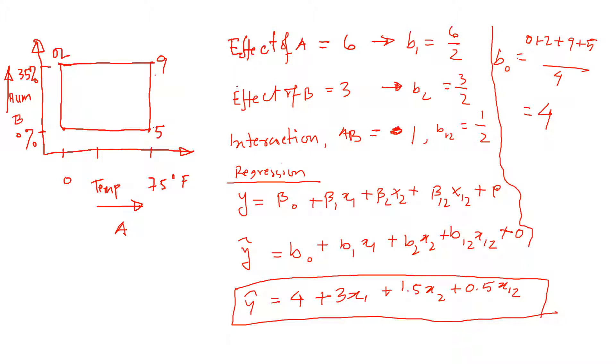If you increase level A to level B, low to high level, this was our A. The humidity was our factor B, and then we calculated the effect of B was 3.